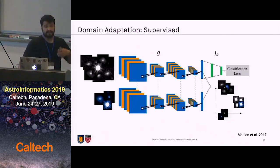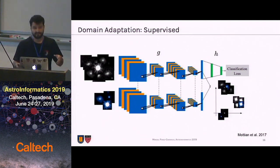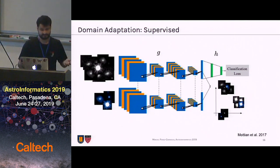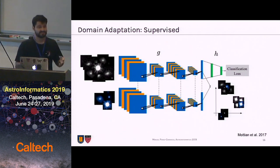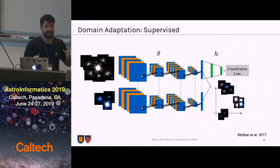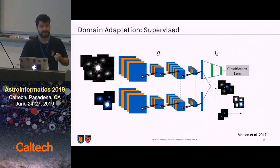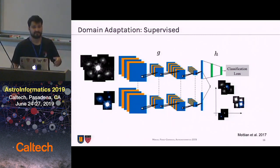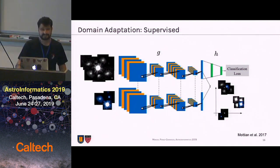In supervised domain adaptation, we have some labels on the target, but we don't use unlabeled data to perform the task. A common choice is to create a class-based loss function in which samples from the same class are mapped nearby together and objects from different classes are mapped far from each other, independently of the domain membership. The problem with that is in cases when we have very few labels on target, it is easy to fall into overfitting.